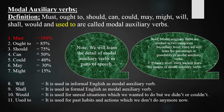Let's discuss what modal auxiliary verbs are. Modal auxiliary verbs are one of the kinds of verbs — verbs have 20 plus kinds. Modal auxiliary verb is a sub-kind of auxiliary verbs, and auxiliary verbs have three to four kinds. The definition: must, ought to, should, can, could, may, might, will, shall, would, and used to are called modal auxiliary verbs.